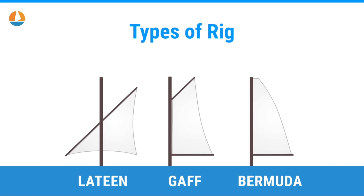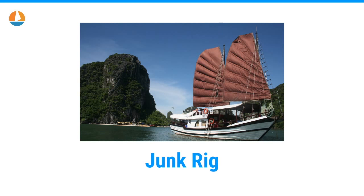The Bermuda rig has a three-sided or triangular mainsail. The gaff rig has a four-sided mainsail with a pole at the head called the gaff. And the lateen rig is a three-sided mainsail on a long yard with no foot beam — it uses just a line to hold the sail in place. There are a couple of other rigs but they're not really worth mentioning here. I do go over them at improvesailing.com/rig. I also want to mention the junk rig — this is the Chinese sail — which has a lot of horizontal battens used to control the sail.